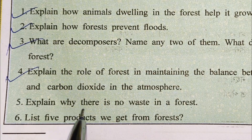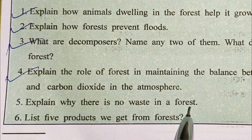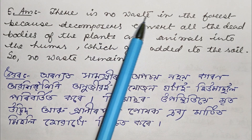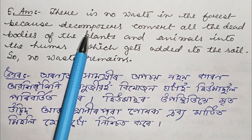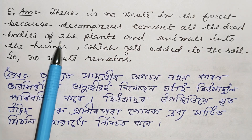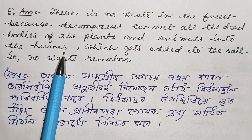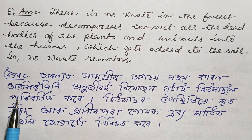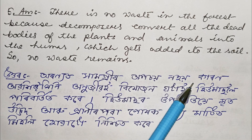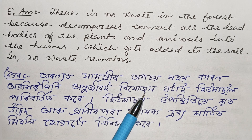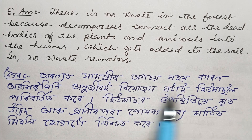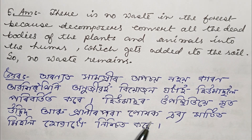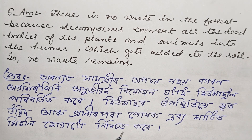Question number 5: Explain why there is no waste in a forest. There is no waste in the forest because decomposers convert all the dead bodies of the plants and animals into humus, which gets added to the soil. So, no waste remains. The nutrients from dead plants and animals are returned to the soil, ensuring nothing is wasted.